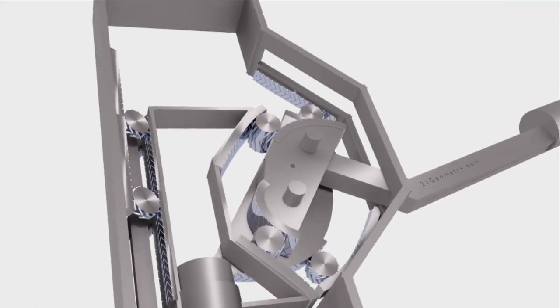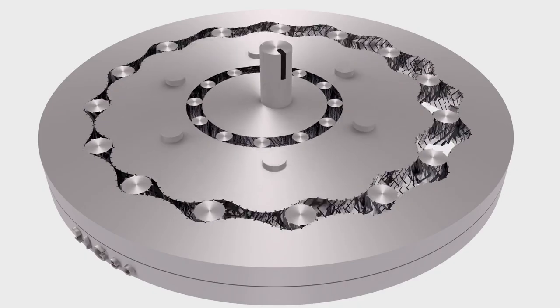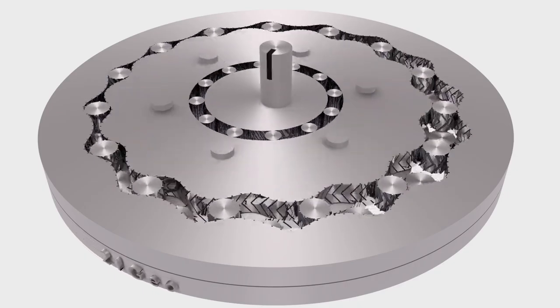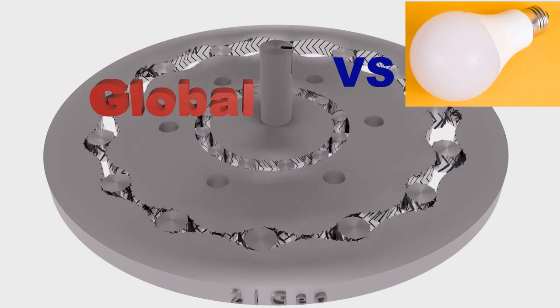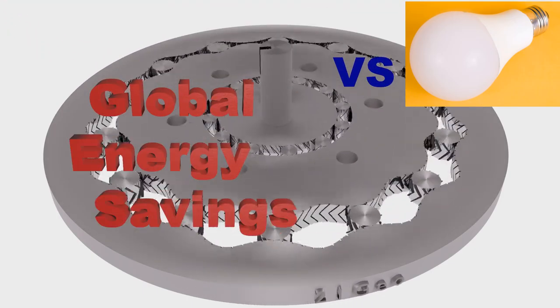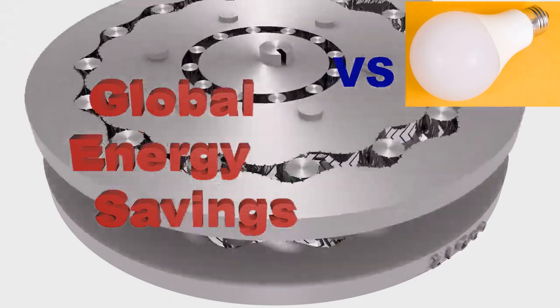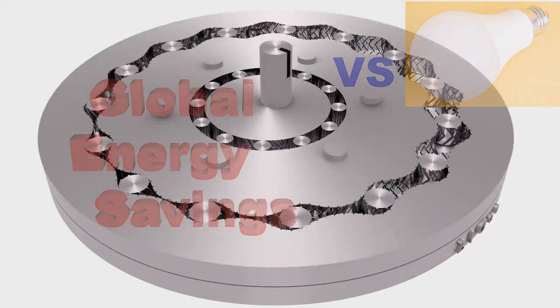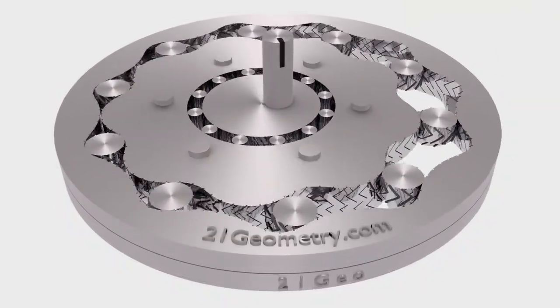It's not just mechanisms. Roll delivers high efficiency drives. Our drives will rival LED light bulbs for global energy savings. The reason is simple. Everything in our drive rolls. Nothing slides. It has the efficiency of a bearing and the function of a gearbox.